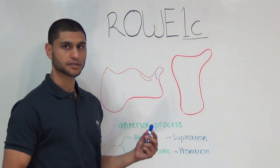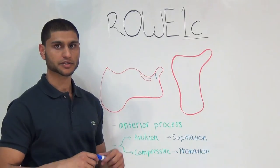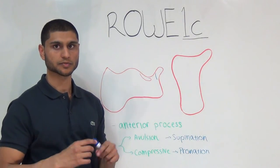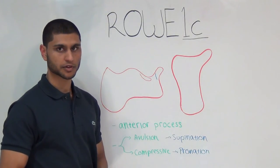On an x-ray, this might look like an os calcaneum secundum, but keep in mind that fracture lines are often very jagged, and accessory ossicles have very smooth edges. The compressive type occurs when the foot is pronated.